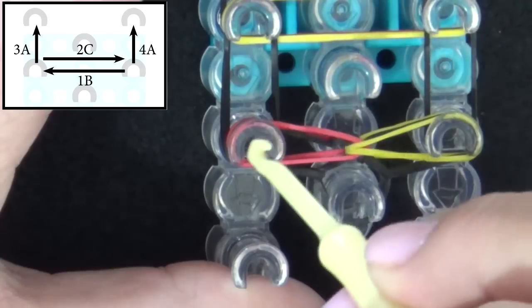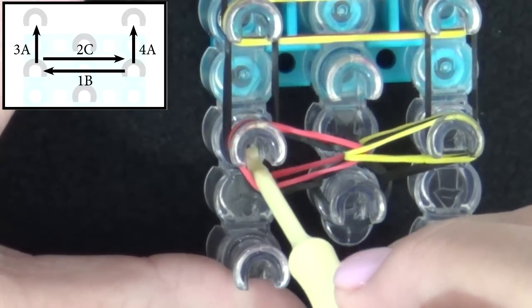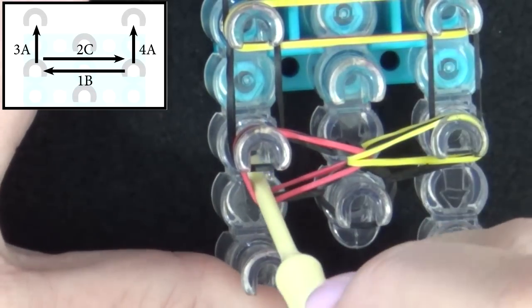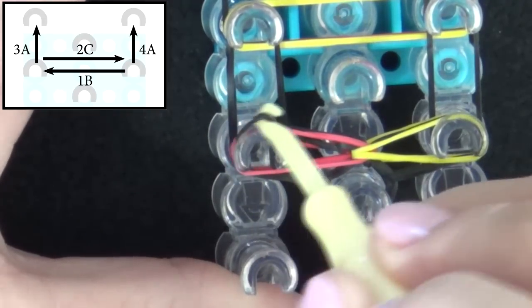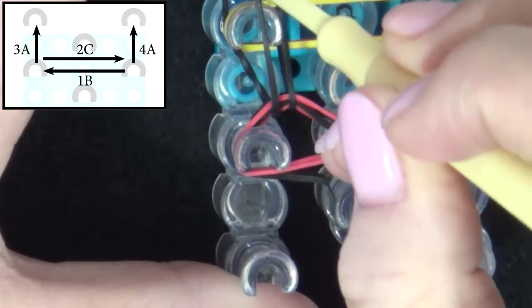Number three will be looping the A band forward. You pull all those bands back, reach in and grab that, and you pull the A band forward.